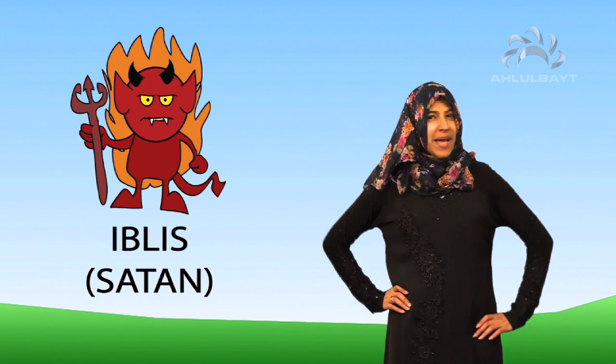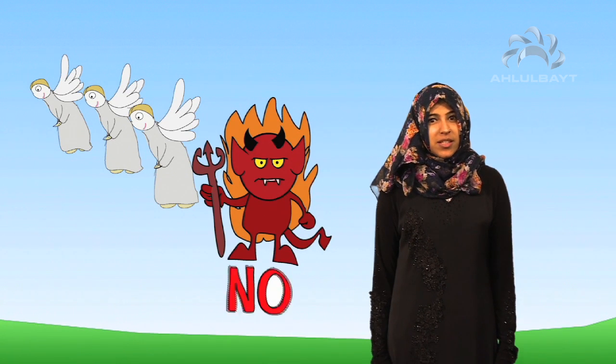However there was one jinn called Iblis who thought he was better than Adam because he was made of fire. Allah told the angels to bow down to Adam but he refused. Because of this Allah didn't let him stay in paradise with the other angels and this made Iblis very angry.